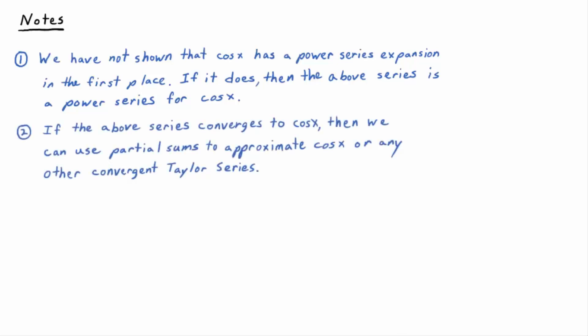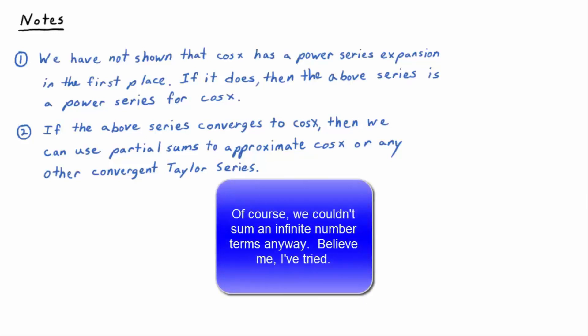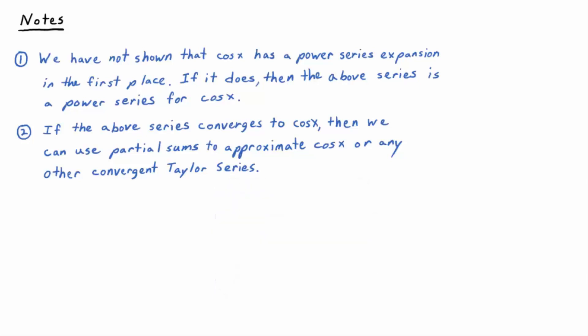Number two: if the above series converges to cosine of x, then we can use partial sums to approximate cosine of x. The idea is we don't have to go all the way to infinity—it might be enough to go to n equals 10 or whatever to approximate the cosine of x or any convergent Taylor series.